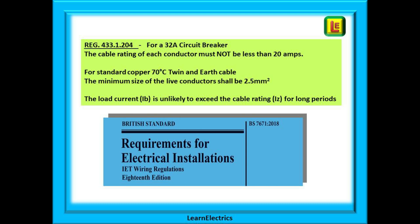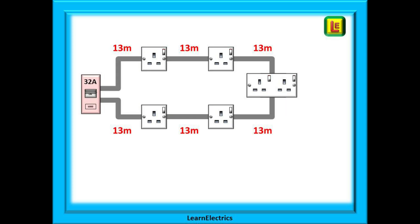Let's begin by putting some cable lengths and amps onto the circuit. We're installing 2.5 millimeter cable and each socket is 13 meters apart. This gives us a total cable run of 78 meters and a distance of 39 meters to the furthest point from the consumer unit, the double socket.